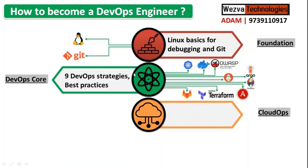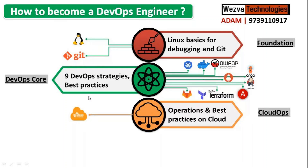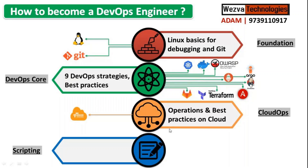In the nine best practices, learn the latest tools — at least one per category — so you can get end-to-end understanding. Then get into cloud ops: to implement DevOps you should be aware of at least one cloud platform and its operations side. Pick whether it is AWS or Azure, and learn the operations side of it. After that comes scripting.